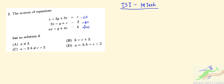Now it is pretty simple. If we add equations 1 and 2, first of all let's rewrite this: x plus 2y plus 3z equals c.